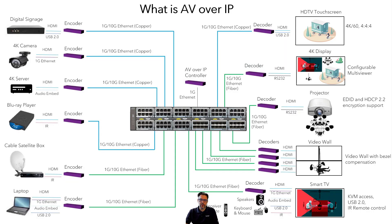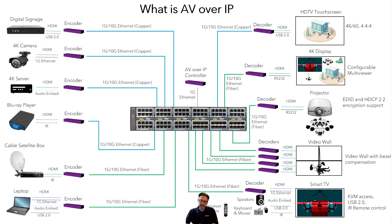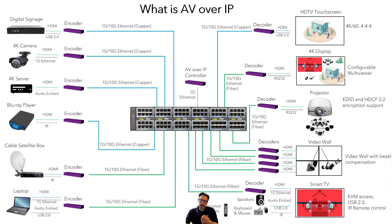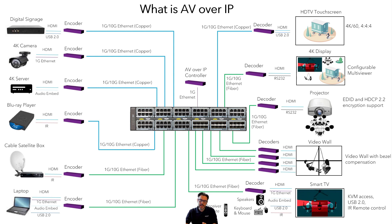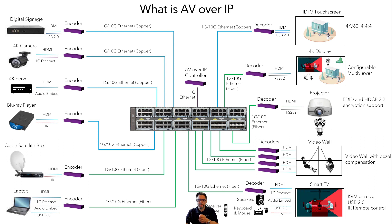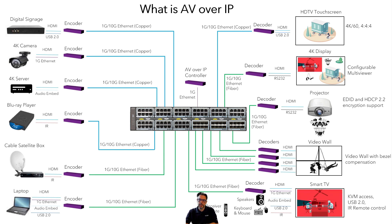So what is AV over IP? This is very simple — it is the transport of your AV signals over an Ethernet network. On the left, you can find your video and audio sources that will be attached to an encoder or transmitter. Your AV signals are packetized and those Ethernet packets can go through a network. On the other side, you have your destinations — your loudspeakers, your displays — attached to a decoder or receiver so that the AV signal can be reproduced there.